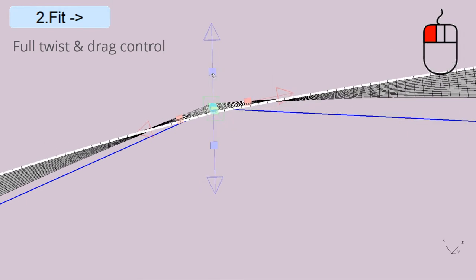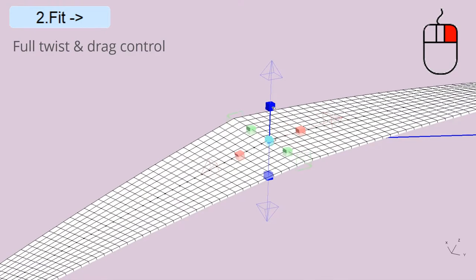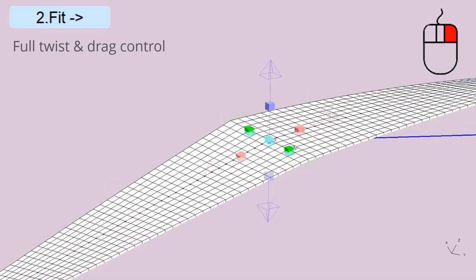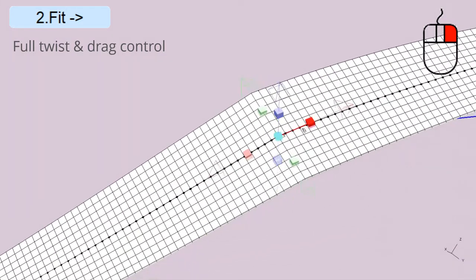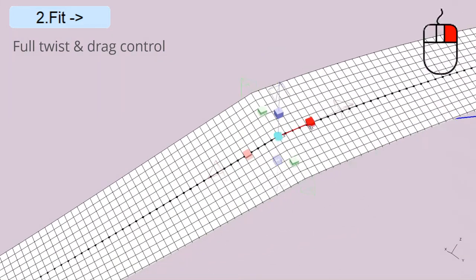Right-click dragging these cubes skews the belt in each local direction. These controls can be quickly mastered to manipulate the belt through the most extreme geometries.